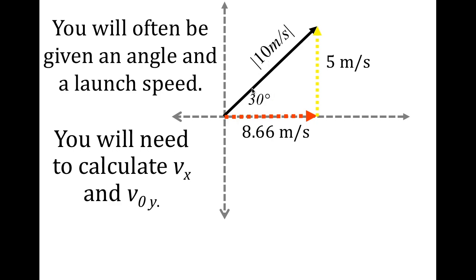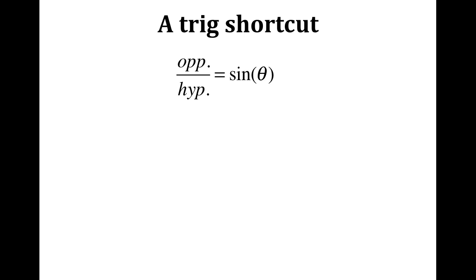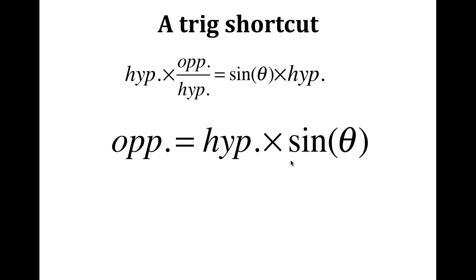You'll notice that relative to this angle, we're looking for the opposite side and the adjacent side. Over and over in this class, we're given the hypotenuse and we want the opposite and adjacent sides. The trig shortcut: sine of an angle equals opposite over hypotenuse. Solving for the opposite side, multiply both sides by hypotenuse, and we get: opposite equals hypotenuse times sine of theta. Memorize this.